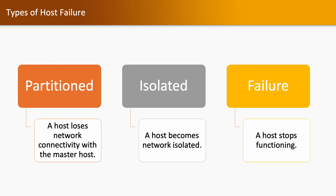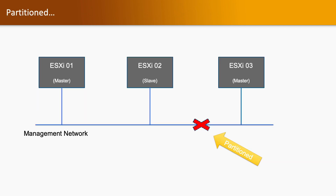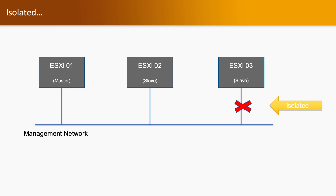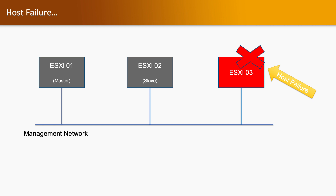There are three types of host failure. First is Partition: when network communication breaks between the master and slave ESXi hosts, the master becomes segregated and the slave works as a separate instance. Second is Isolated: when a slave ESXi host loses connectivity with the master, that host is considered isolated. Third is Host Failure: if any ESXi host in the cluster goes down completely, it is considered a host failure.